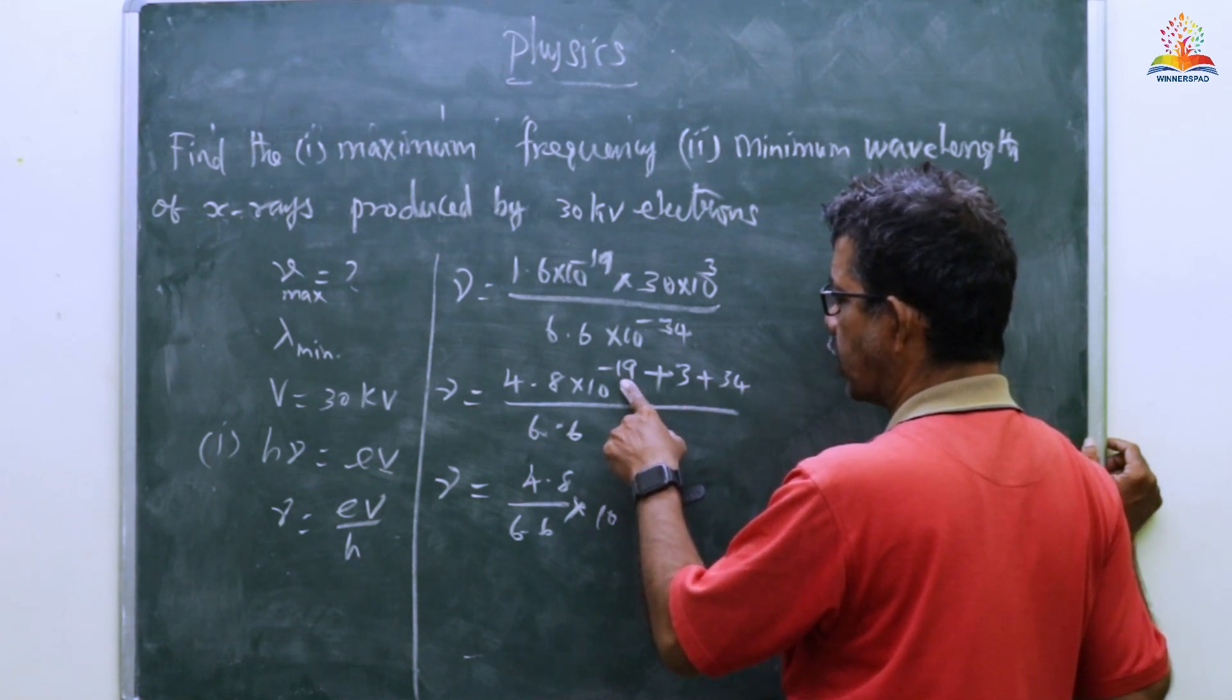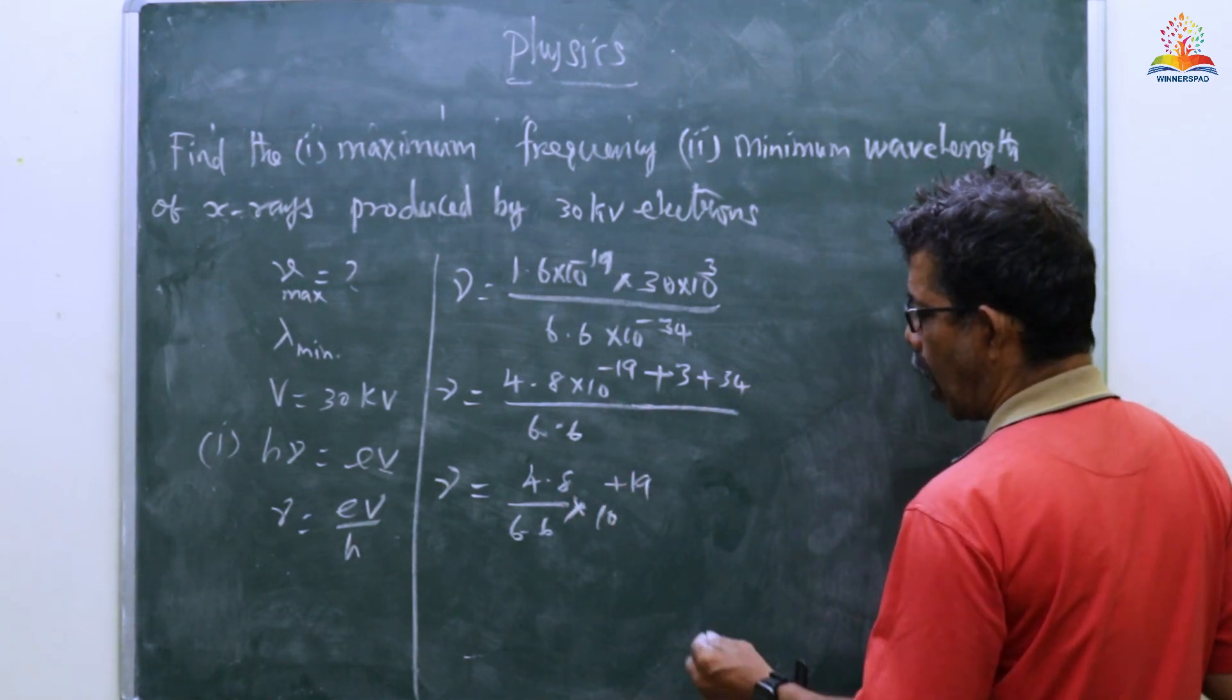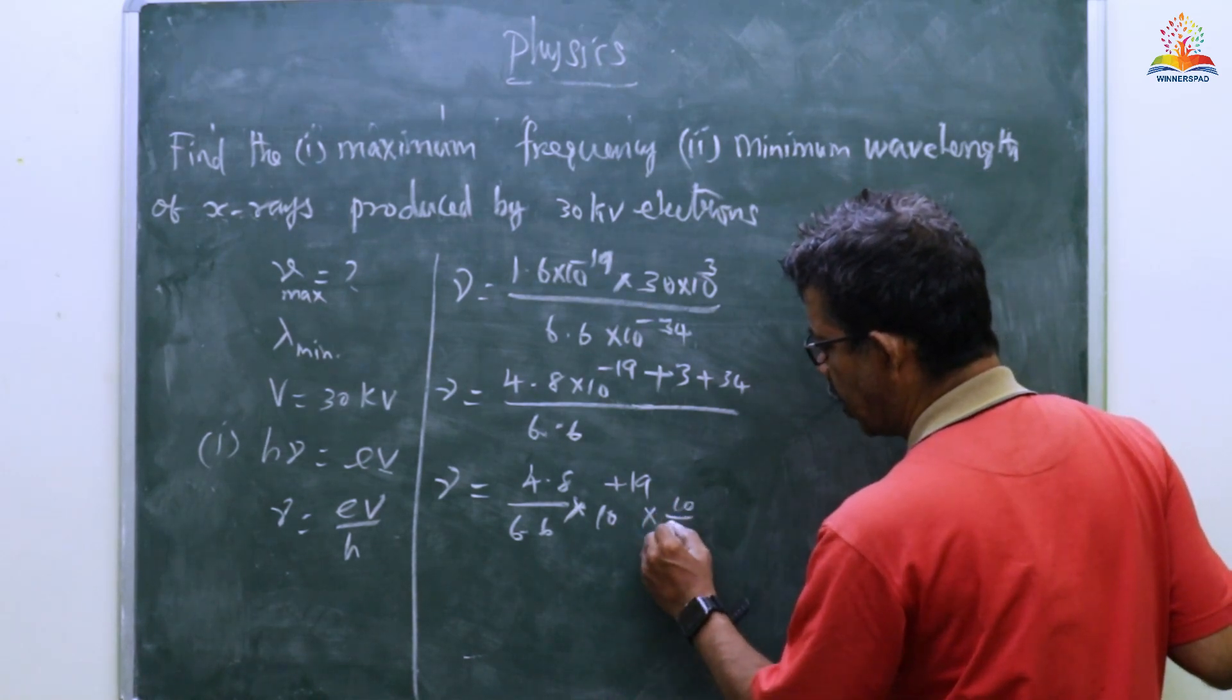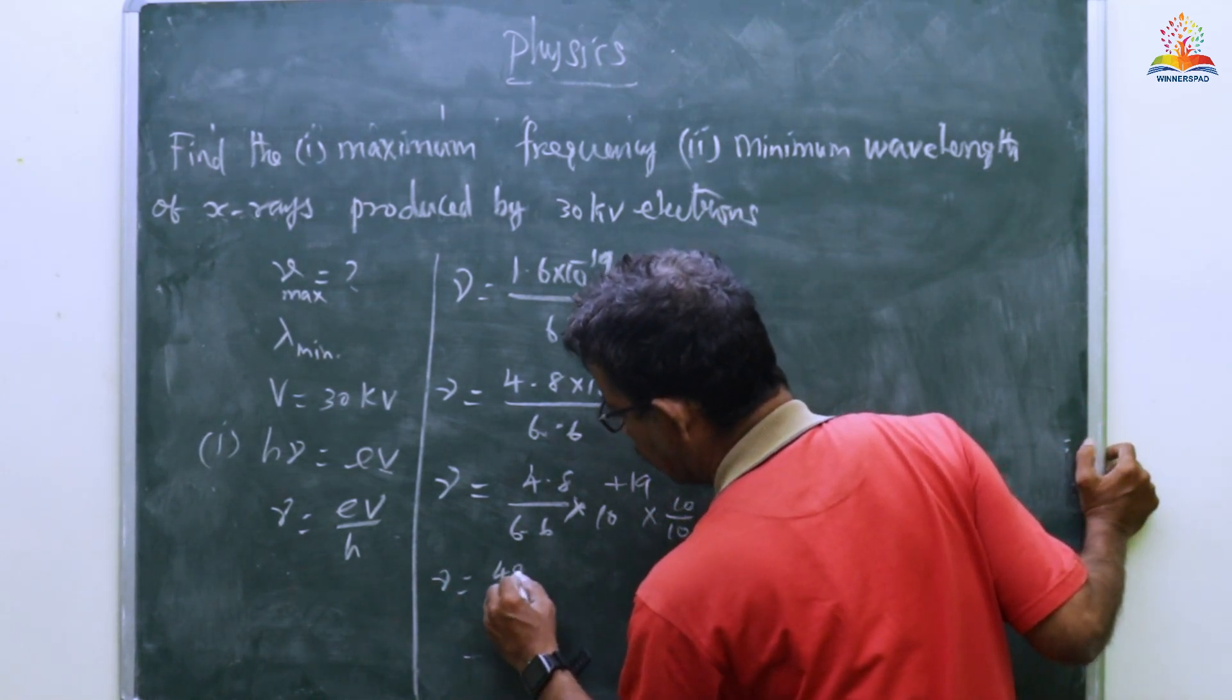Then this is minus 19, then plus 19. Then 10 by 10 equals simplification. Then we'll write 48 by 66.